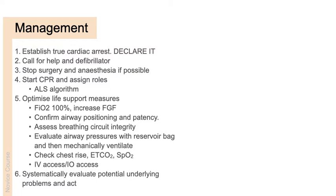Summarising the key QRH points: first, establish true cardiac arrest — if monitoring signals something wrong, check the patient; if there's no pulse, the colour is wrong, or findings are corroborated, declare a cardiac arrest, let everybody know, call for help, and get a defibrillator. Early defibrillation is the key to successful resuscitation. Stop surgery and anaesthesia if possible — the cause may relate to surgery, so stop any severe bleeding and get the patient haemodynamically secure. Then start CPR, assign roles, and follow an ALS algorithm.